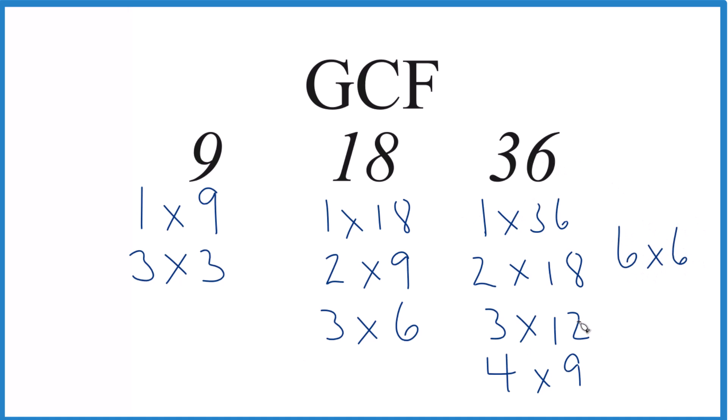So we have all these factors, we can see what's in common now. 1 goes into each factor, 2 no, but 3, 3 goes into 9, 3 goes into 18, 3 goes into 36. Looks like 9 is a common factor as well, but the greatest common factor is 9, 9 is the greatest common factor. So 9 goes into 9, 18, and 36 evenly.